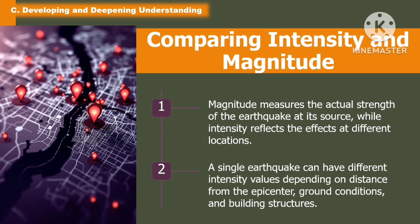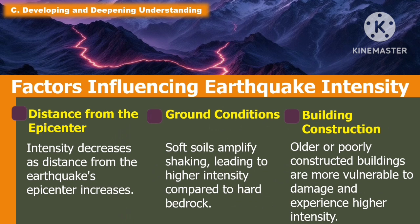A single earthquake can have different intensity values depending on distance from the epicenter, ground condition, and building structures. The factors influencing earthquake intensity are: first, distance from the epicenter — intensity decreases as distance from the earthquake's epicenter increases; second, ground condition — soft soils amplify shaking, leading to higher intensity compared to hard bedrock; and third, building construction — older or poorly constructed buildings are more vulnerable to damage and experience higher intensity.